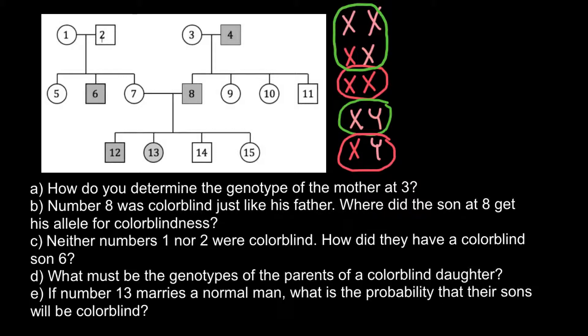This information would be enough to answer all the questions. Question A: how do we determine the genotype of mother number 3? This is mother 3, this is her husband, and these are the children. The genotype of person number 4 — this male — is affected, so his genotype must be one defective X chromosome and a normal Y chromosome.